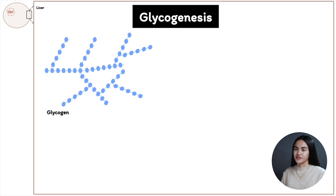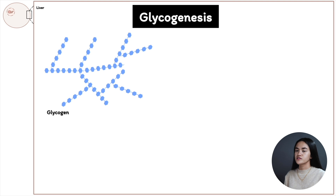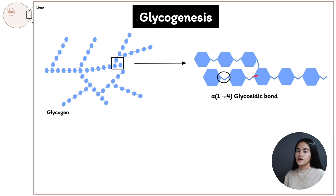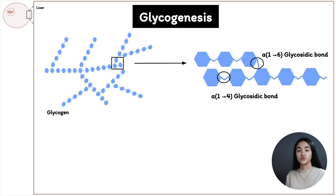Before we break down how glycogen is synthesized, let's first discuss this polymer of glucose and its structure. Glycogen is a highly branched polymer of glucose. These glucose molecules are linked via alpha 1-4 glycosidic bonds in a linear form, and the branches are linked via alpha 1-6 linkages, occurring every 12 to 14 glucose molecules.